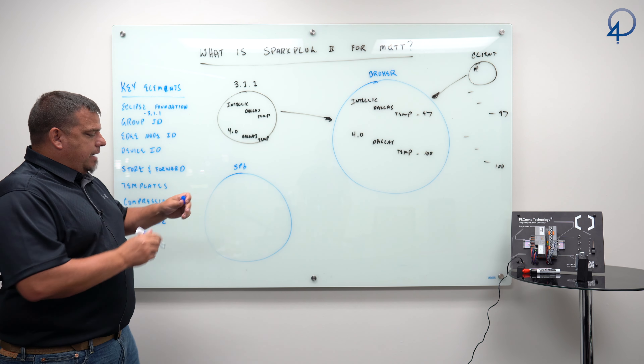So what is Spark Plug B for MQTT? The Spark Plug B specification — which you can Google as 'MQTT Spark Plug B' — is managed by the Eclipse Foundation. It was developed and written in 2016 by Cirrus Link, a company owned by the co-inventor of MQTT, Arlen Nipper. They turned over that specification to the Eclipse Foundation in 2019. Spark Plug B is a specification for packaging up industrial data and communicating it to an MQTT infrastructure.